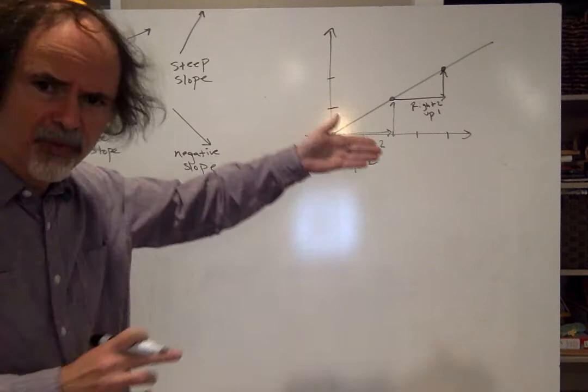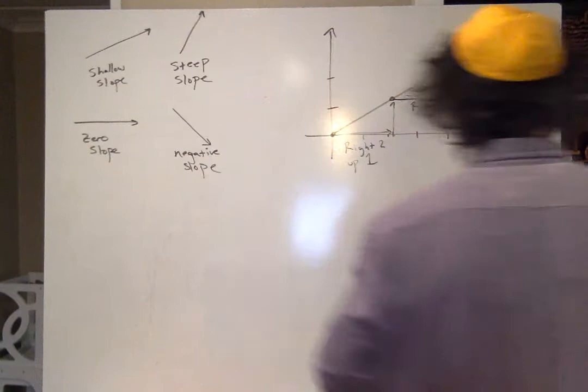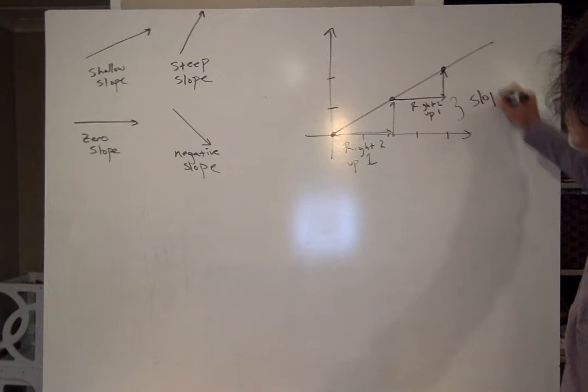All lines have this property where you get this fixed rule, move this far to the right and this far up, or this far to the right and this far down. You can make this rule. This rule right here defines something that they call the slope.